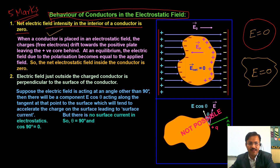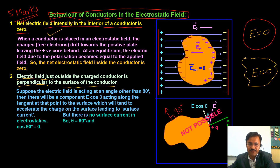The second property: electric field lines are always perpendicular to the surface of a conductor. If we consider any point on the conductor surface, the field lines will make a 90° angle with the surface — at any point, anywhere on the surface, field lines are perpendicular to the conductor surface.